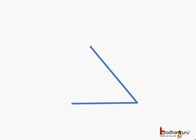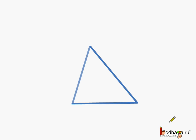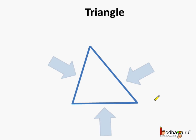We already know when two lines meet they form an angle. This is an angle. Now let us try to join these two open arms at this end by a third line or a third line segment. What happens? We get a closed figure which is three-sided and it has three corners. It is called a triangle. So a triangle is a closed figure which is three-sided and has three angles.